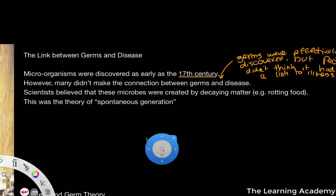Scientists believed that these microbes were created by decaying matter, for example rotting food. This is technically incorrect, however it's not far off what the actual explanation is. And this idea of organisms being created by rotting food or decaying matter is known as spontaneous generation.